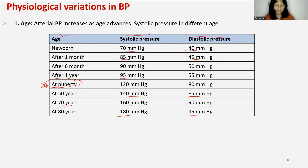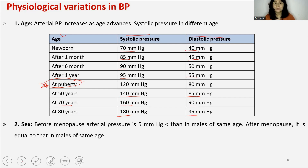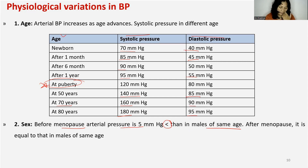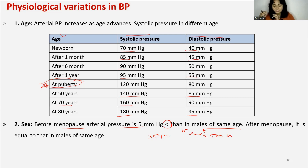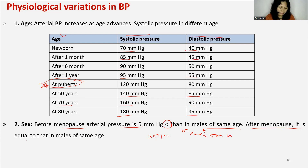Next is sex. Before menopause, arterial pressure is 5 mmHg less in females than in males of the same age. For example, a female at 35 years of age has 5 mmHg less BP than a male of 35 years. This is not a strict rule — it may or may not be — but this variation can exist. After menopause, BP becomes equal to that of a male of the same age.